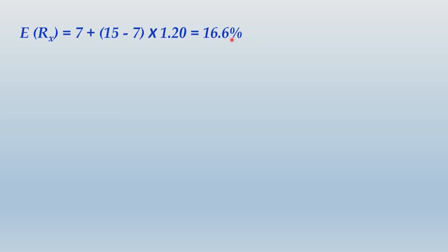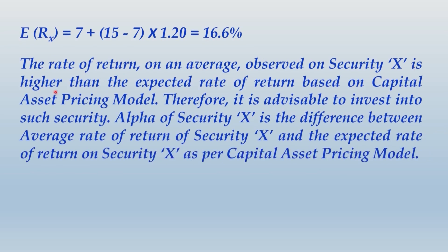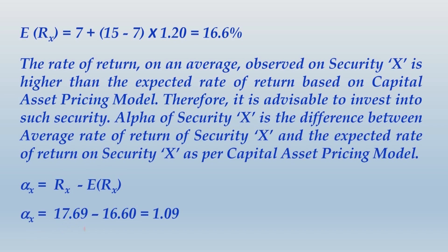The average rate of return observed on security X is 17.69%, which is higher than the CAPM expected rate of 16.6%, so it is advisable to invest in the security. Alpha of security X equals RX minus ERX. Alpha of X = 17.69% − 16.6% = 1.09%. Please write this down and then we move ahead.